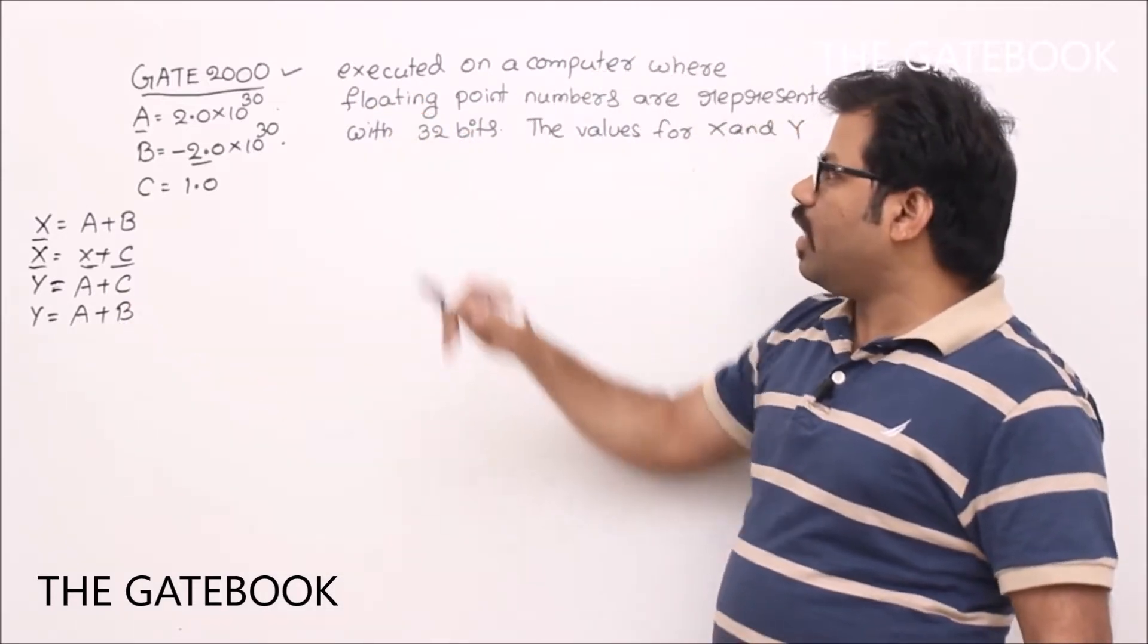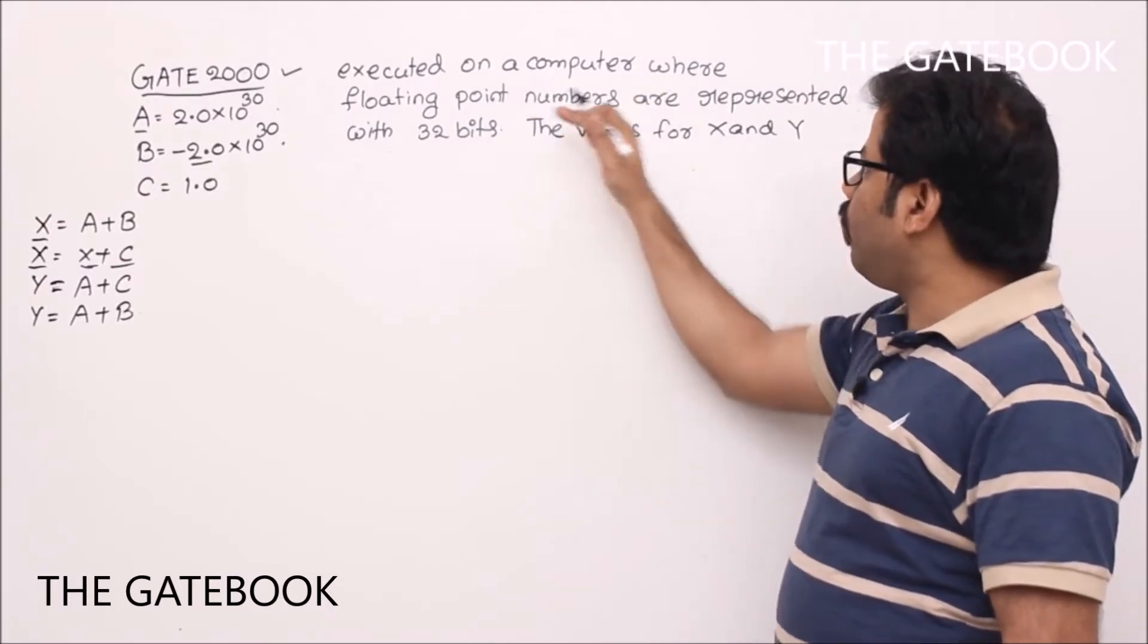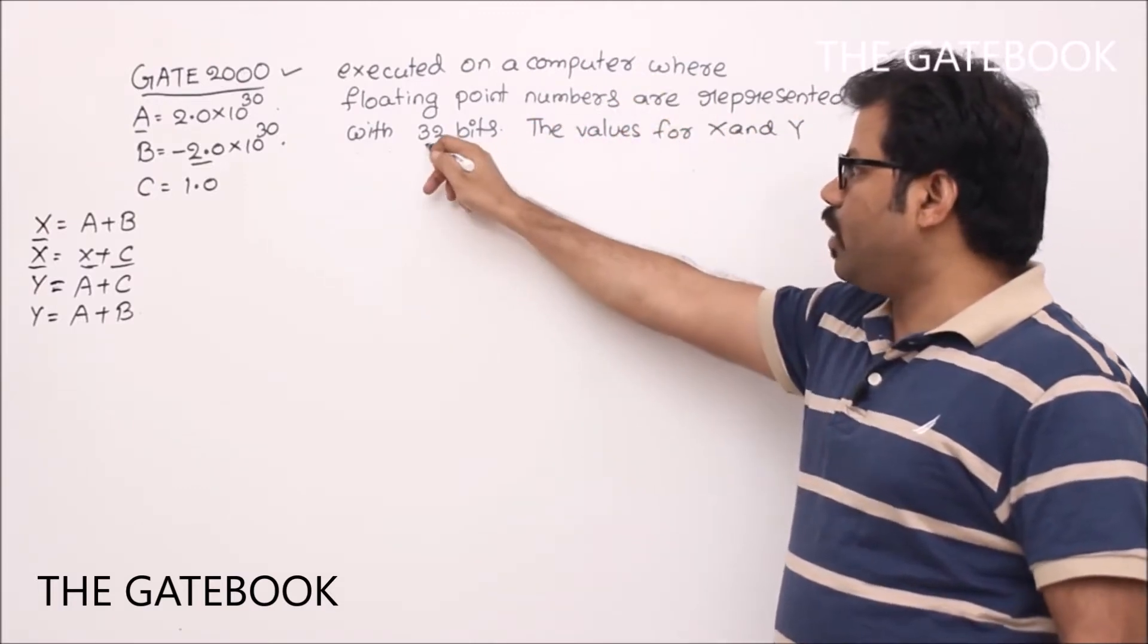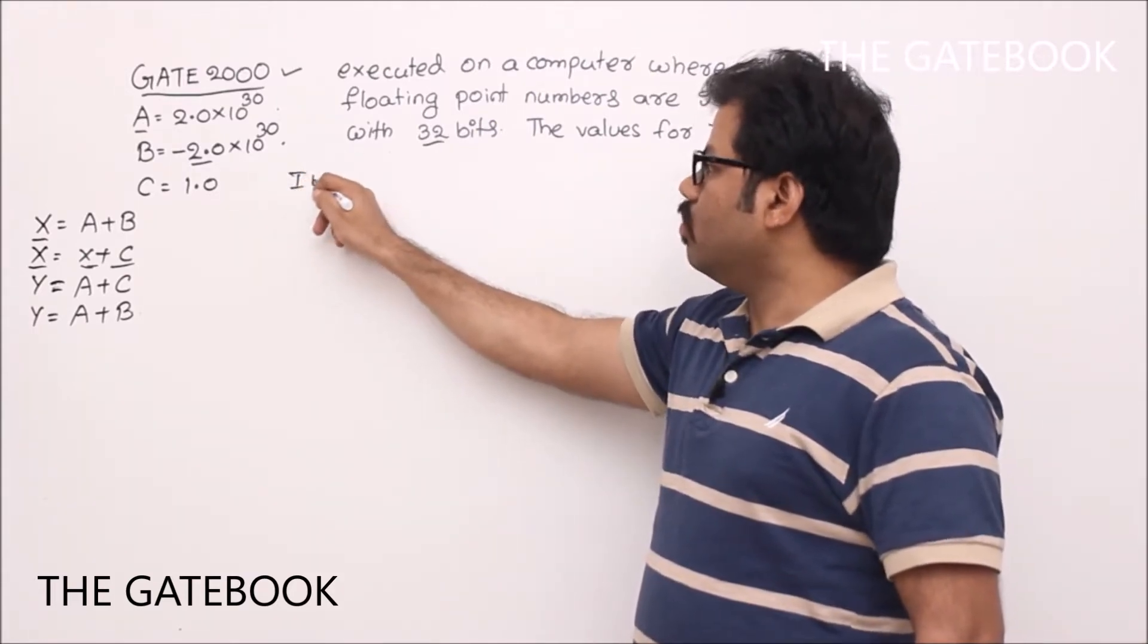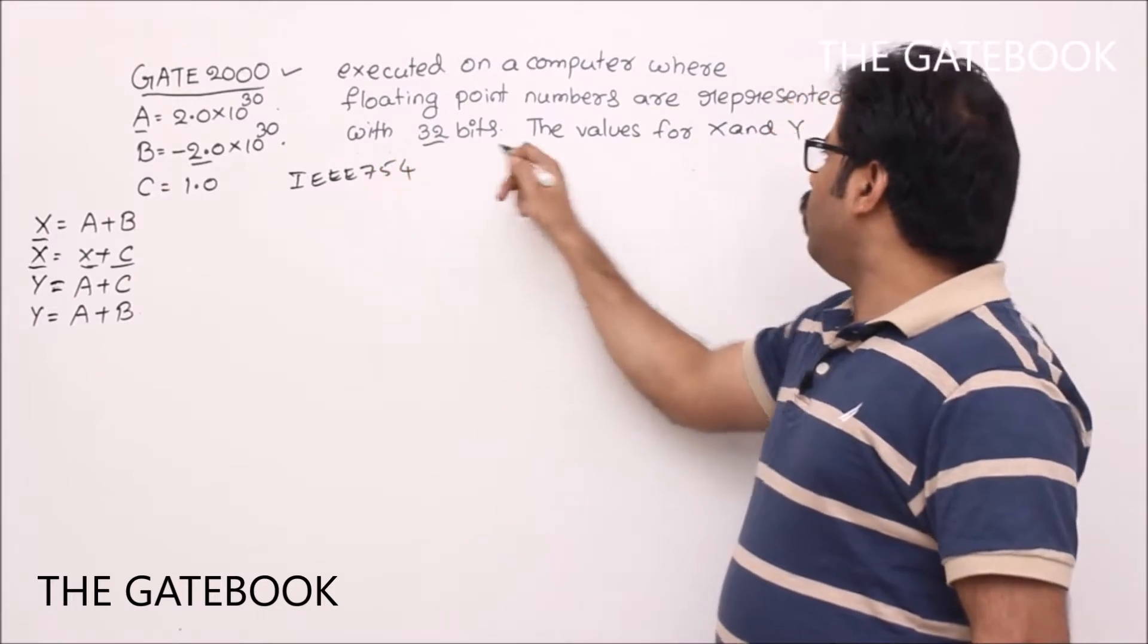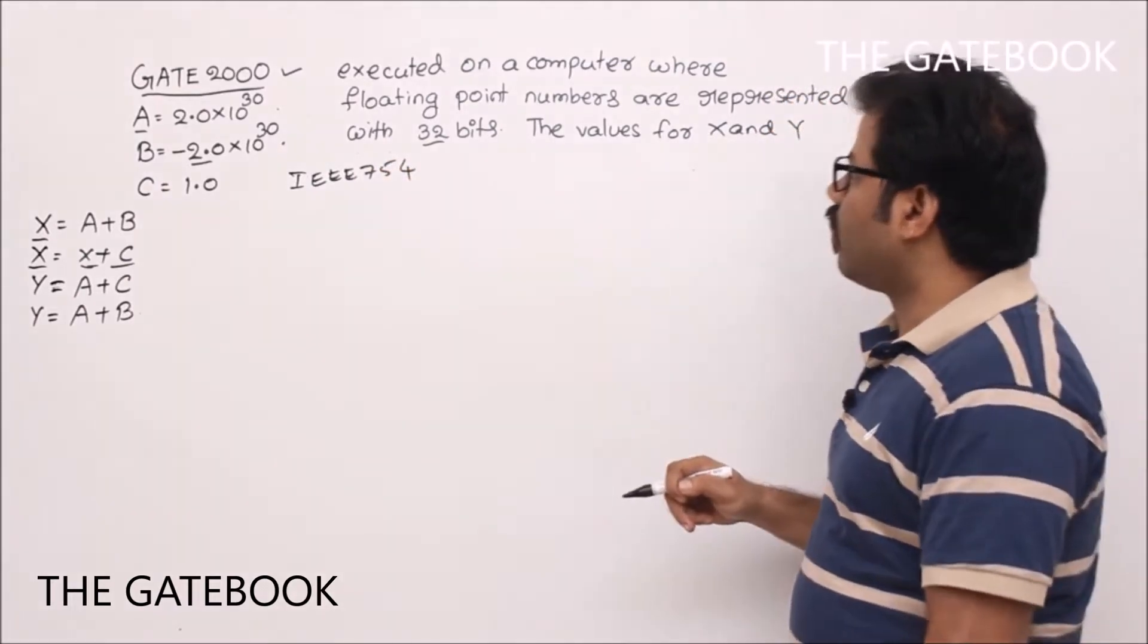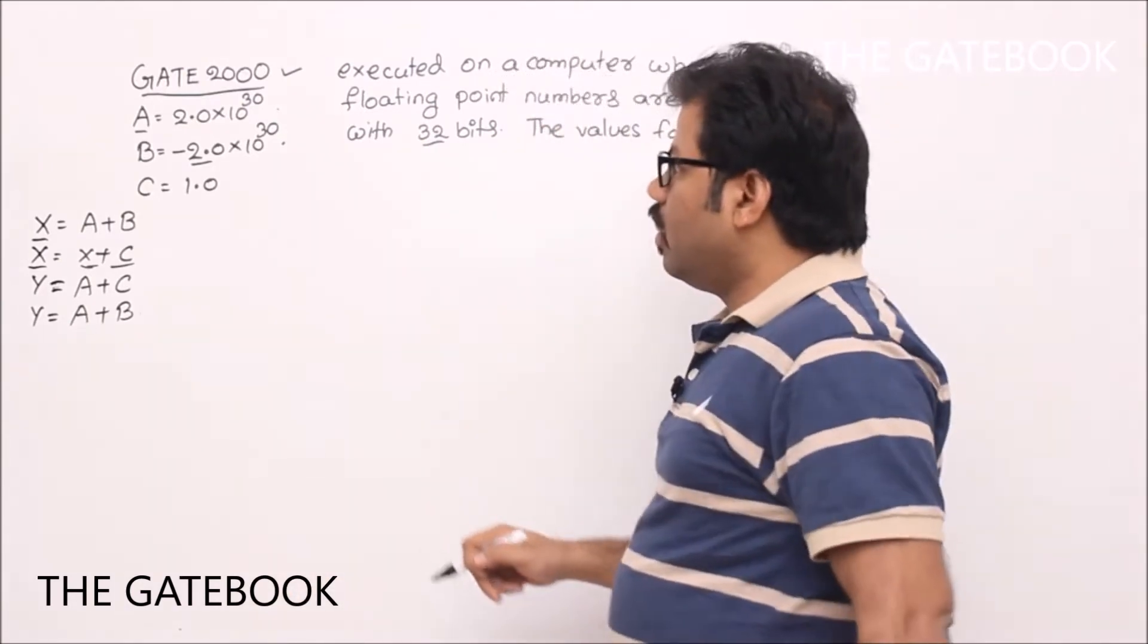And we will see the remaining question. All these instructions are executed on a computer where floating point numbers are represented with 32 bits. So maybe IEEE 754 format we can assume. Okay, so the values for X and Y, that is the question.